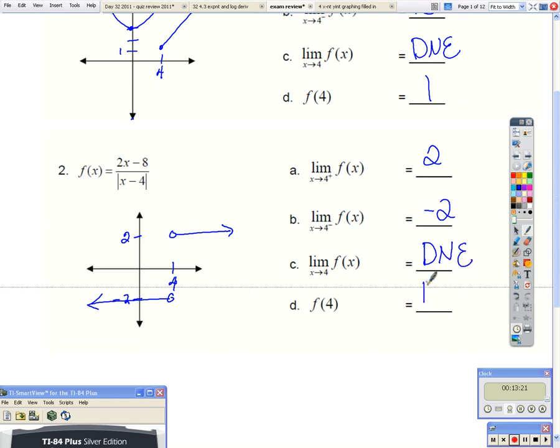And the value, the function at 4 does not exist, because both of these are open. Or, if you go to plug in 4, your denominator would be 0, and we're not allowed to divide by 0.